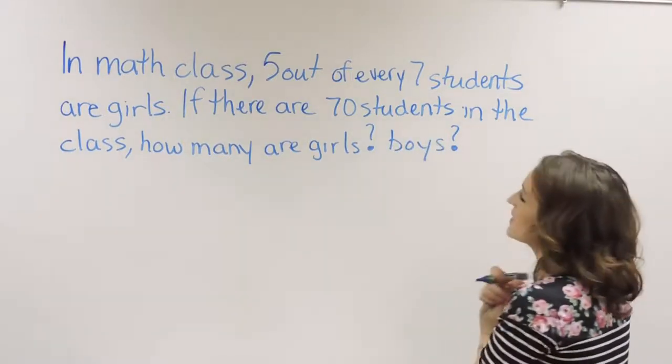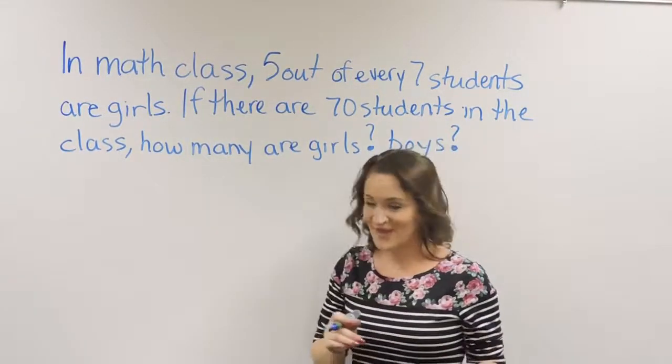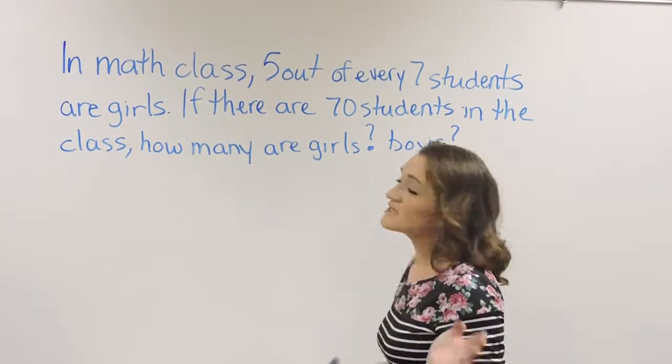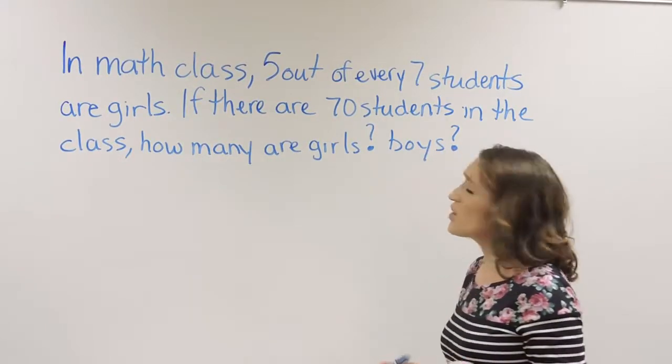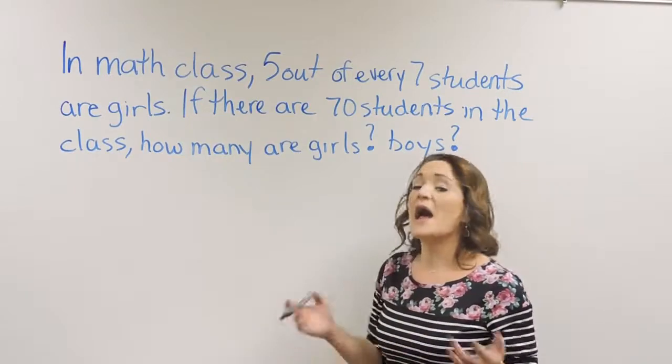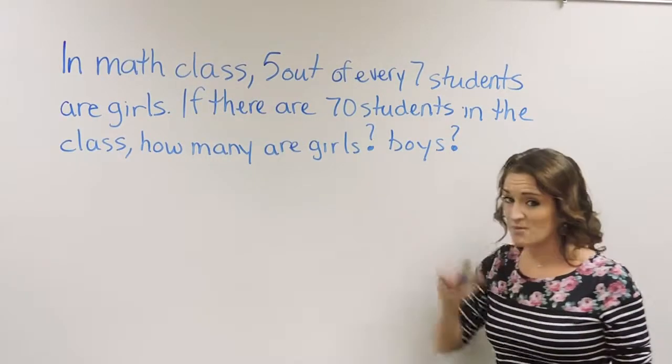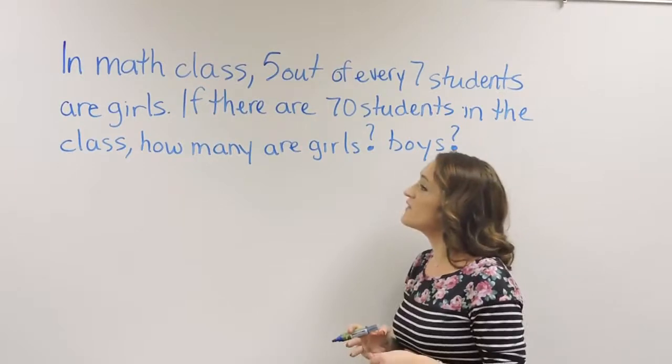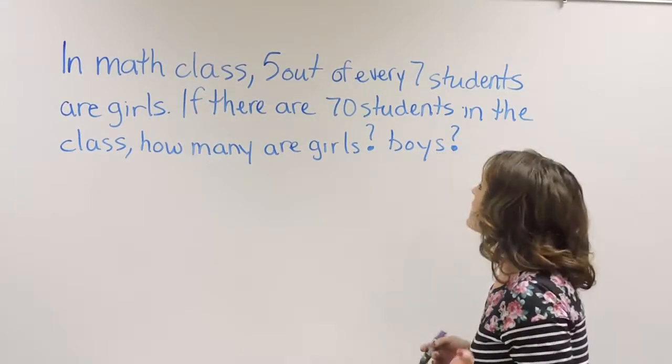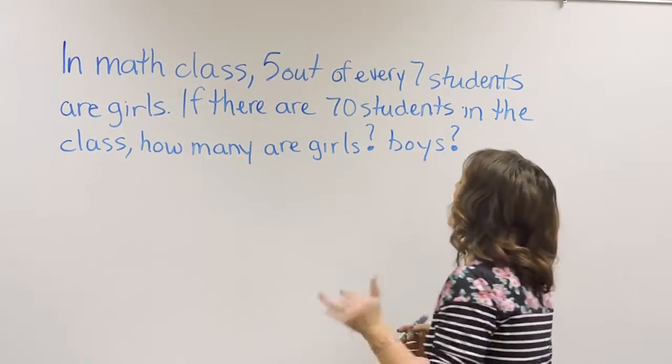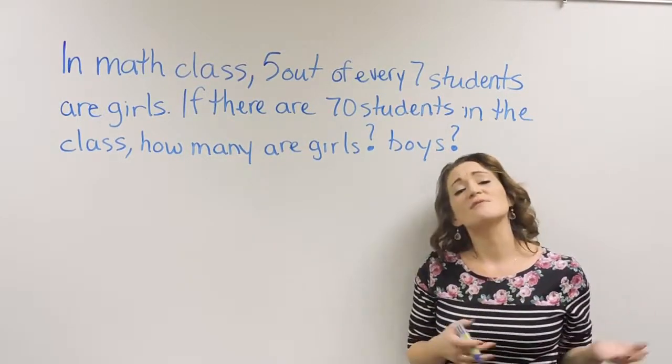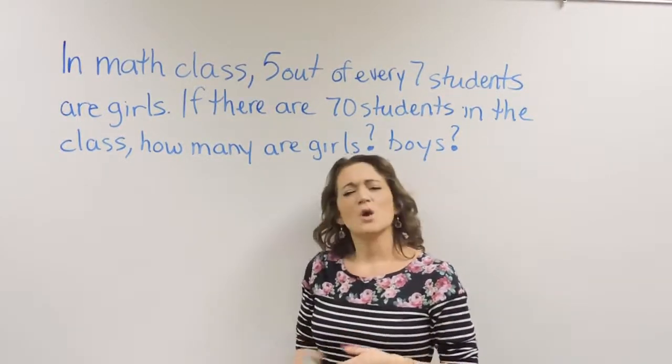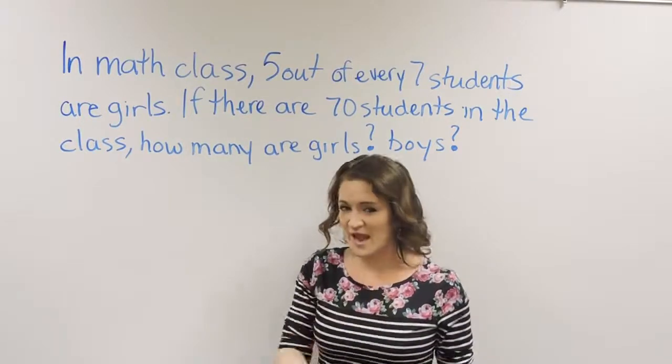Taking a look at this problem, it says: In math class, 5 out of every 7 students are girls. If there are 70 students in the class, how many are girls and how many are boys? So we're trying to figure out, if we have a 5 out of 7 ratio and we have 70 students in the class, how many would be girls and how many would be boys?